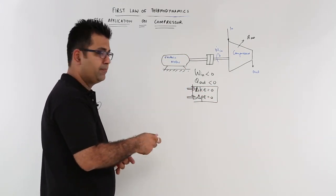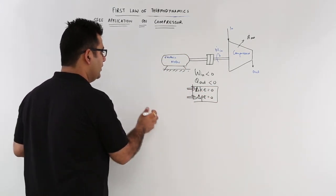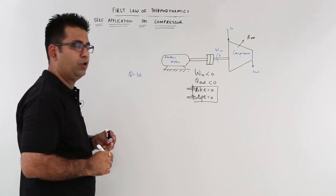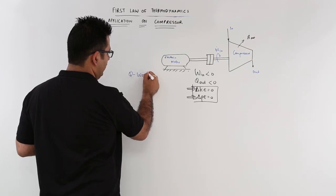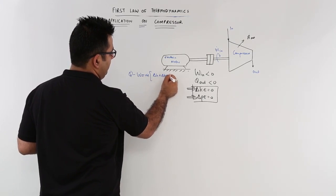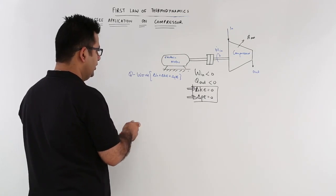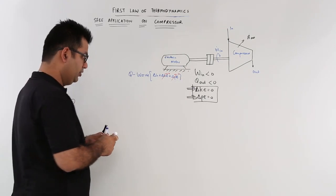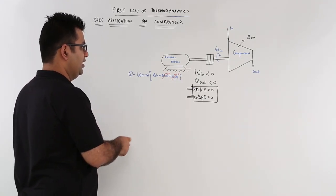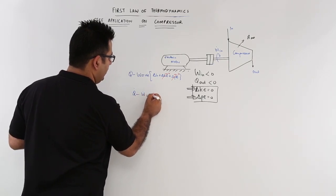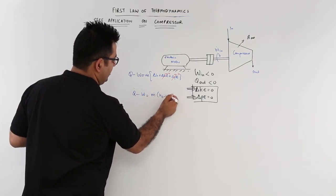So when you have these, the SFE becomes Q dot minus W dot is equal to M dot into delta H plus delta KE plus delta PE. Now out of these, you have this zero, you have this zero. So the equation is reduced to Q dot minus W dot equals M dot into H2 minus H1.